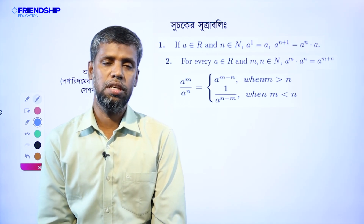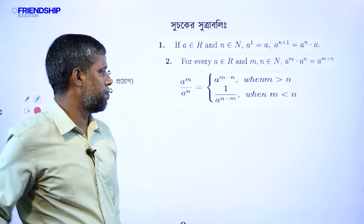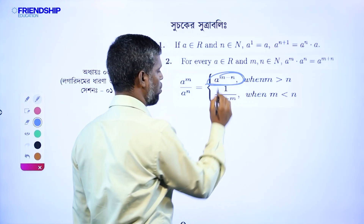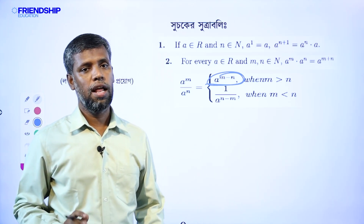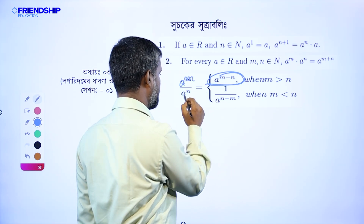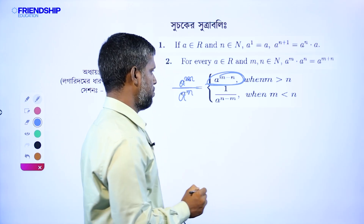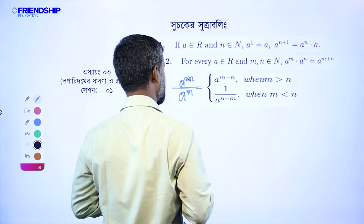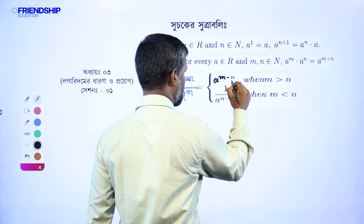We have the second formula. We will calculate: a to the power m divided by a to the power n is equal to a to the power m minus n.